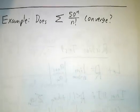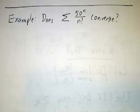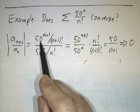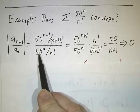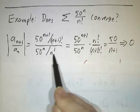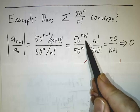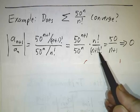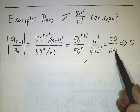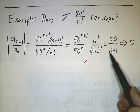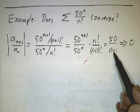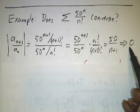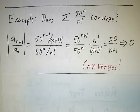Next example: 50^n over n factorial. The (n+1)-th term is 50^(n+1) over (n+1)! divided by the n-th term 50^n over n!. Rearranging, 50^(n+1) divided by 50^n is 50, and n! divided by (n+1)! is 1/(n+1). So the ratio is 50/(n+1). At first this ratio is very large, but as n gets bigger and bigger, this ratio gets smaller and smaller. The limit of the ratio is 0. Zero is less than one, so the whole thing converges.